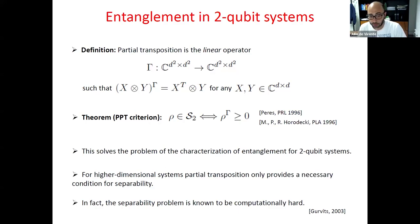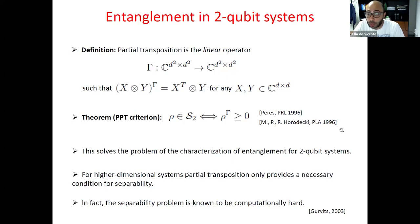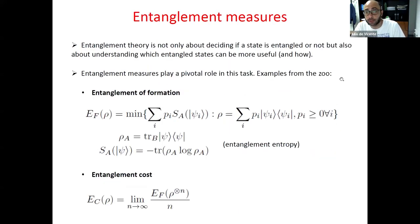This completely solves the problem of deciding whether a state is entangled or not in the case of two-qubit systems. For higher-dimensional systems this only provides a necessary condition for separability, and in fact the separability problem is known to be NP-hard. We cannot expect such a simple characterization for an arbitrary local dimension. At least in the simplest case of two-qubit systems, deciding if a state is entangled or not is easy.